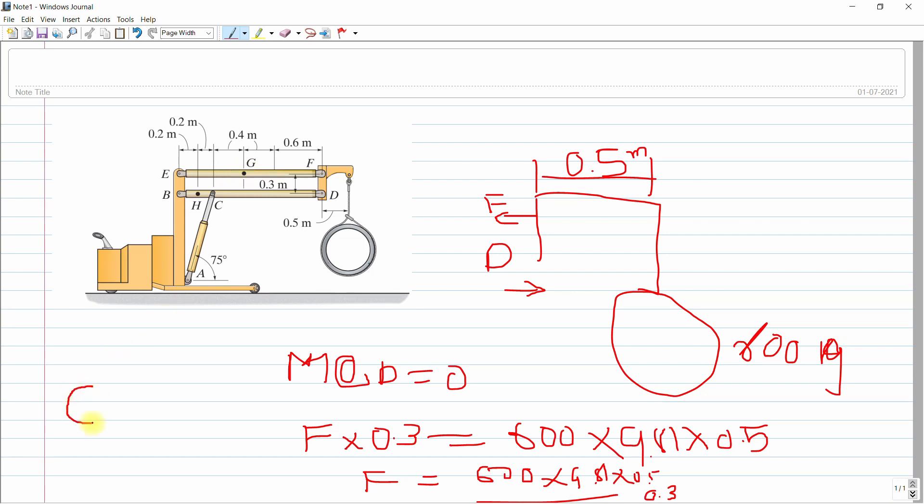So at G location there are one moment, there are one force horizontal force, and there are the vertical force. But here you can see that at F only horizontal force is available.